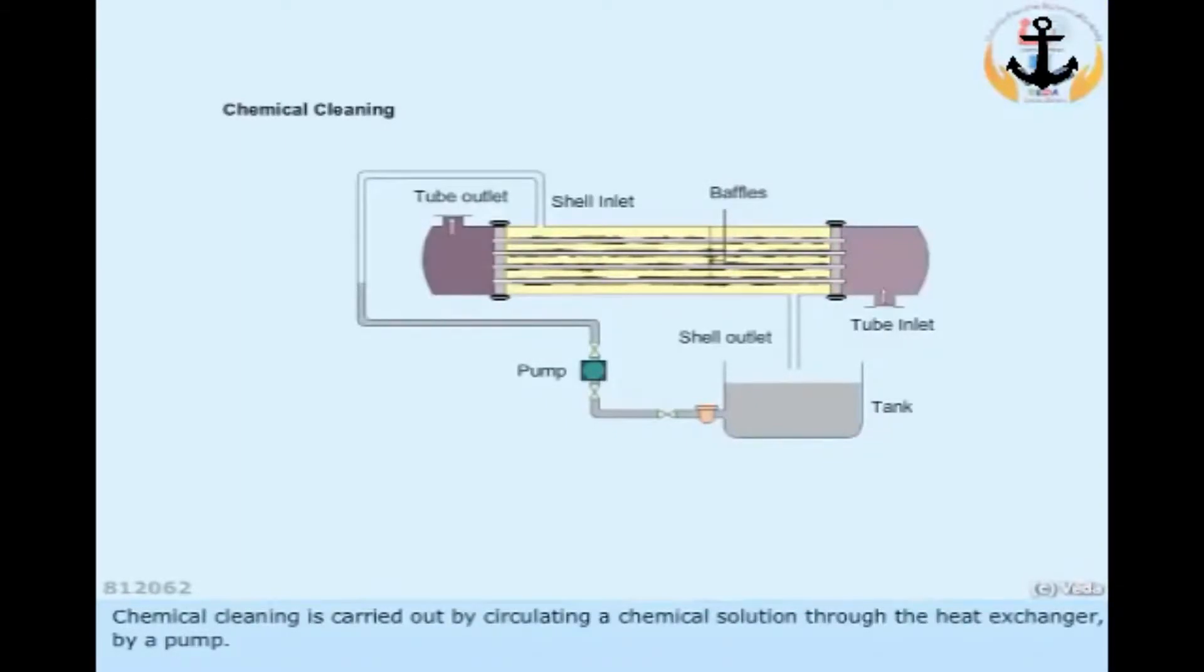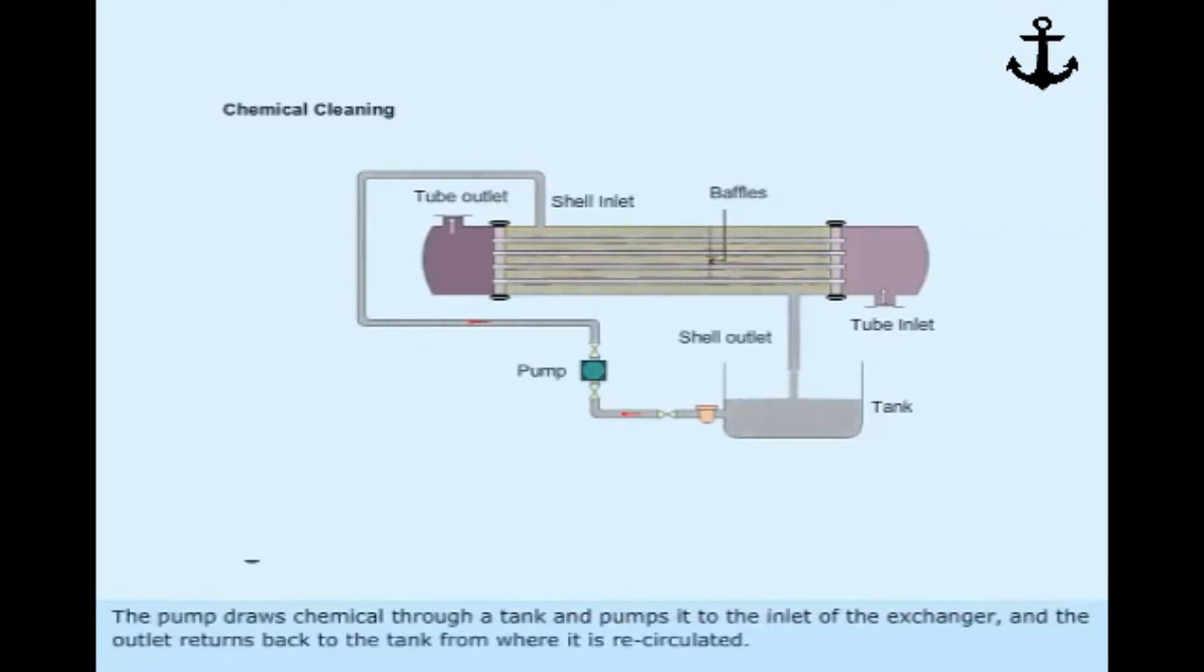Chemical cleaning is carried out by circulating a chemical solution through the heat exchanger by a pump. The pump draws chemical through a tank and pumps it to the inlet of the exchanger, and the outlet returns back to the tank from where it is recirculated.